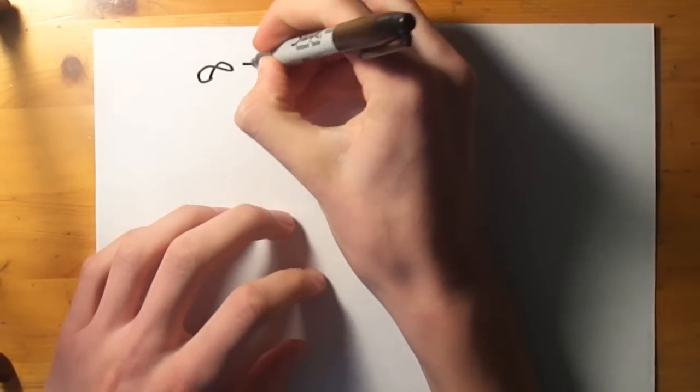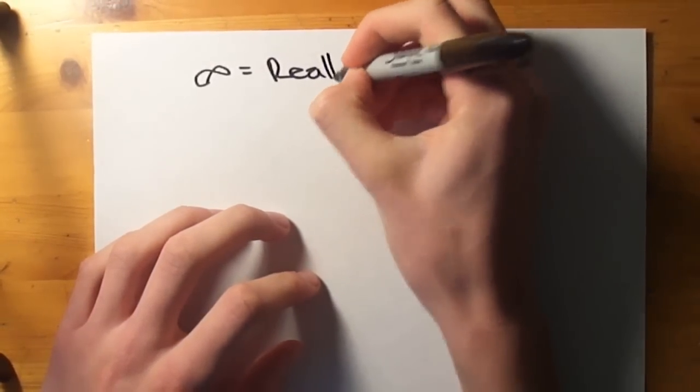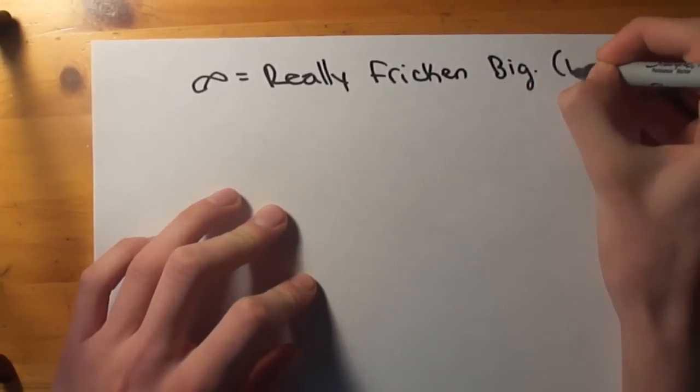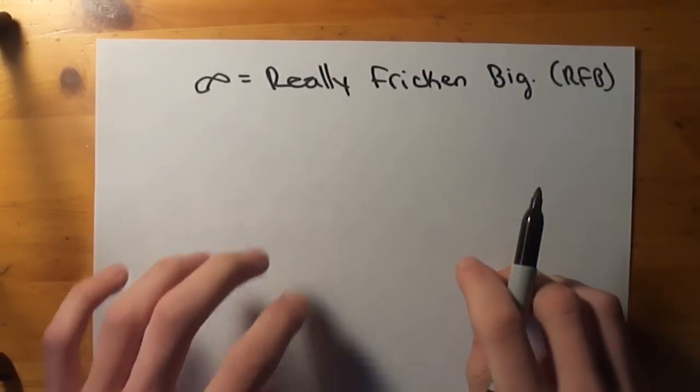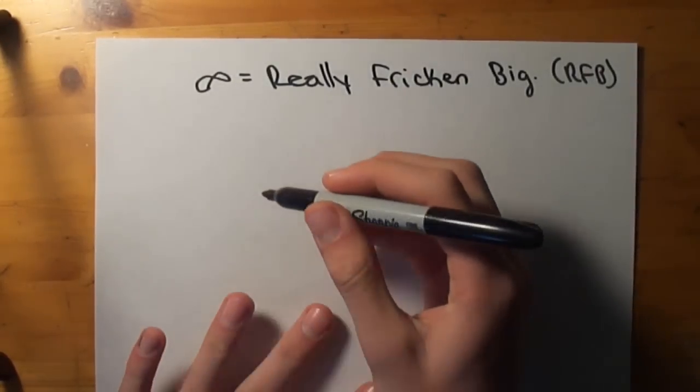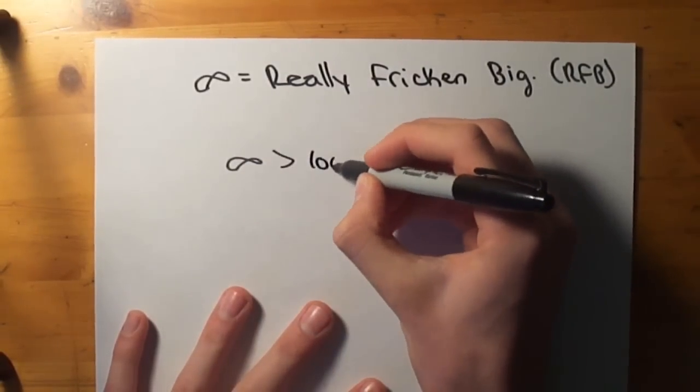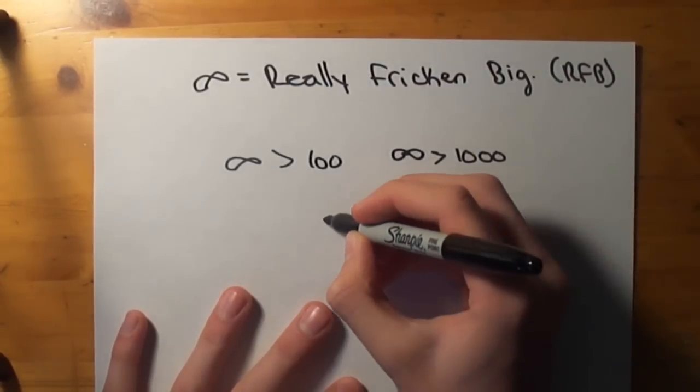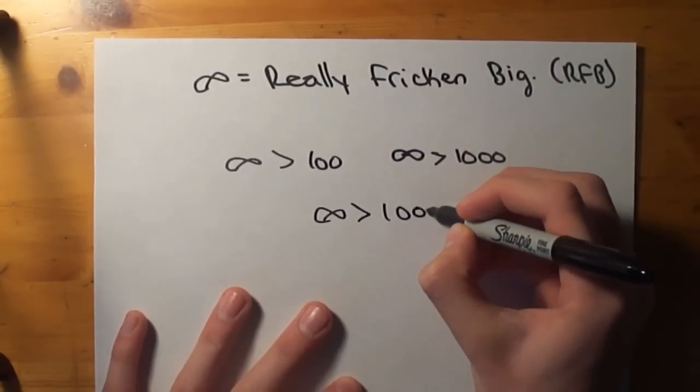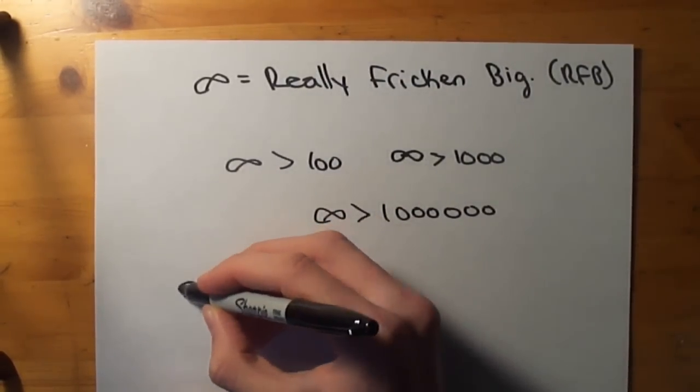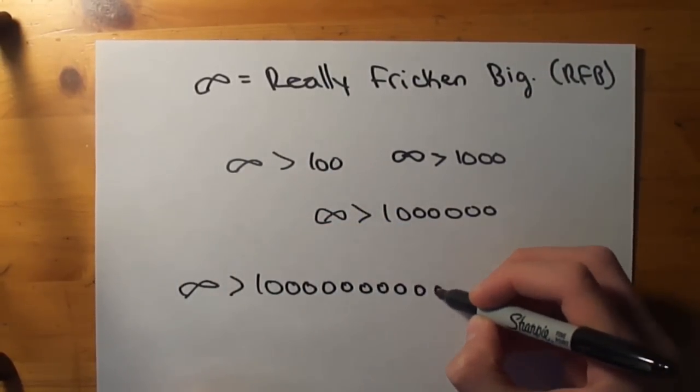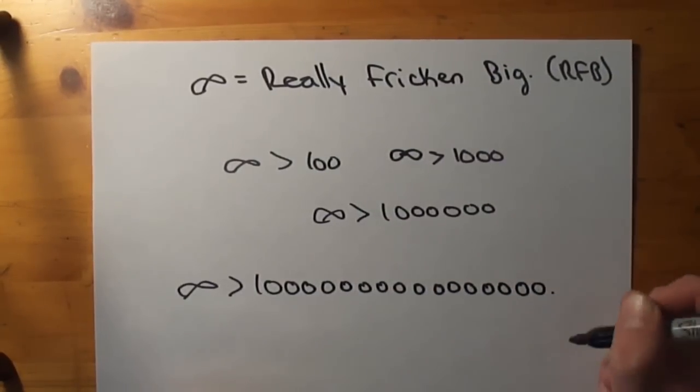So infinity is really, really big. Really frickin' big. RFB. All right? But how big is infinity? Because infinity is greater than 100. Infinity is greater than 1,000. Infinity is even greater than 1,000,000. Infinity is even greater than such a huge number that I'm not even gonna bother counting the zeros. And that is because infinity goes on forever.